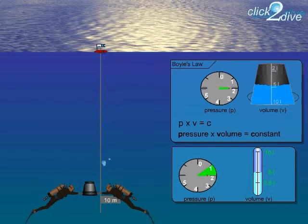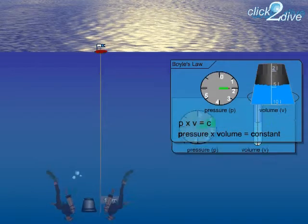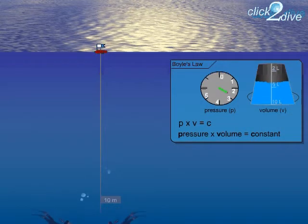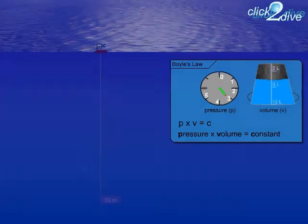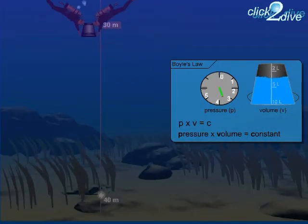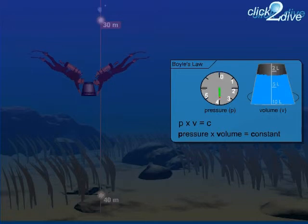In the case of our 10 litre bucket, this means that the deeper we push it, the more the air will be compressed. At a depth of 40 metres, 5 bar, only 2 litres of gas are left in the bucket.